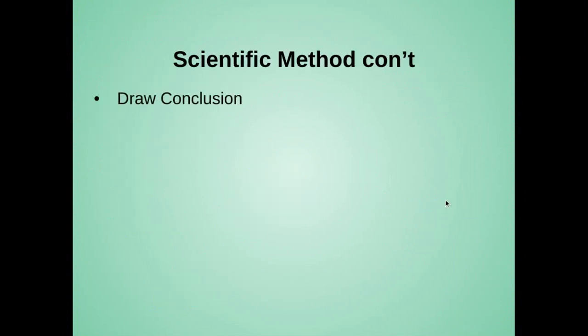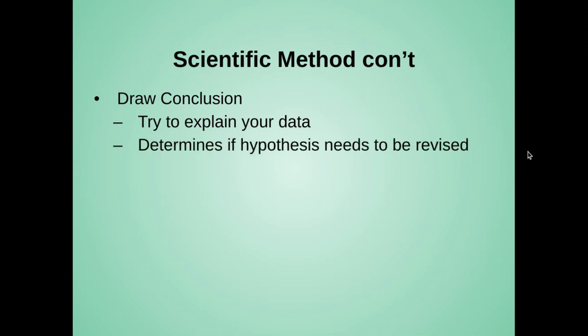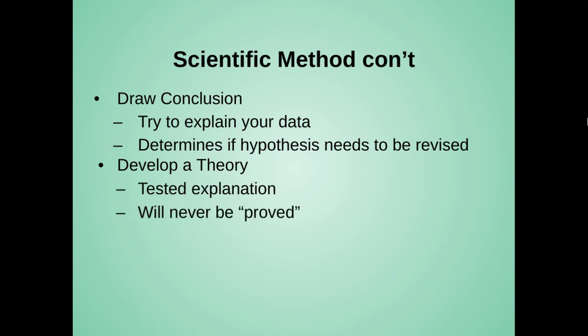So the scientific method continued. Once we collect that data and we put it into our graphs, we can draw a conclusion. We try to explain the data. We determine if the hypothesis needs to be revised. Should we change it? Do we like where it's at? And then we can develop a theory. A theory is a tested explanation. It'll never be proved, but it can become stronger with further investigation.